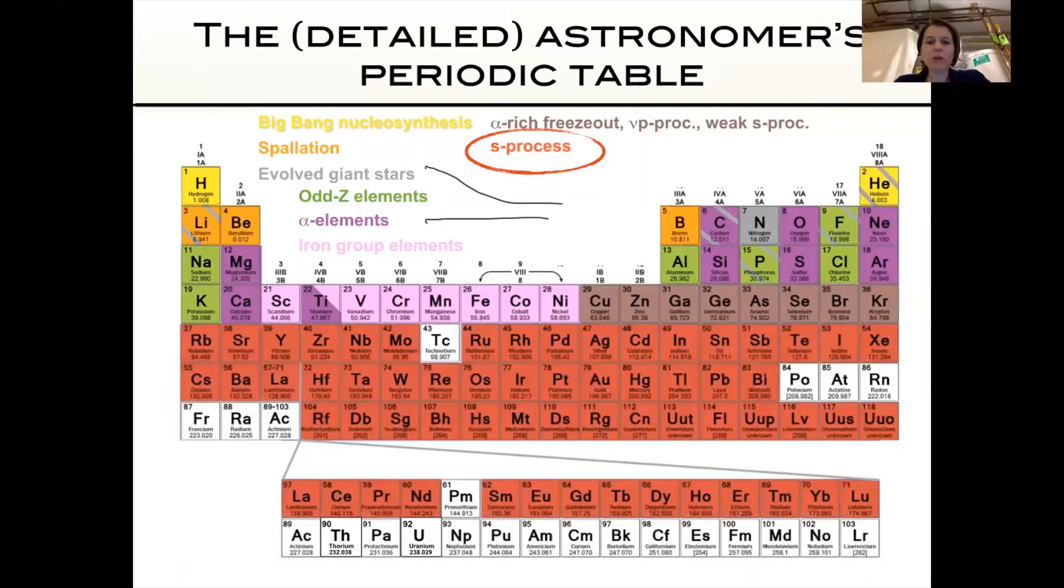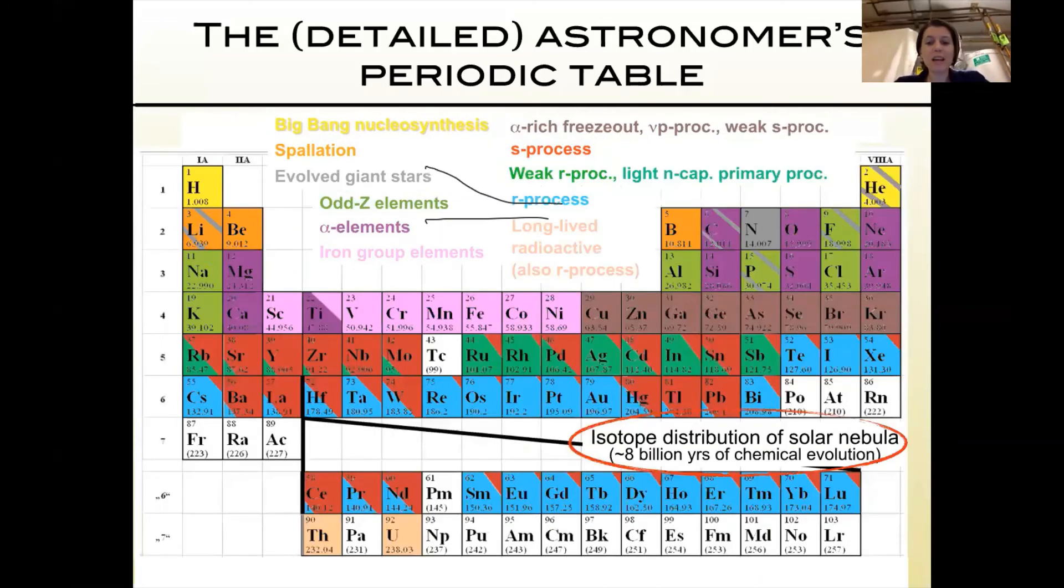For completeness, I'll show you what the s-process makes. The s-process makes the exact same elements but they don't have the same isotopic compositions—the devil's in the detail. You've got to figure out what the isotopes look like if you want the details. However, the abundance patterns as we observe them in stars are very different, so we can distinguish between them. Most importantly, the s-process does not get to thorium and uranium—it stops at lead and bismuth.